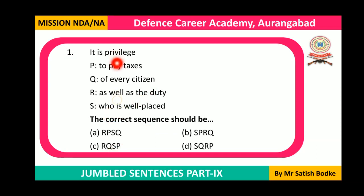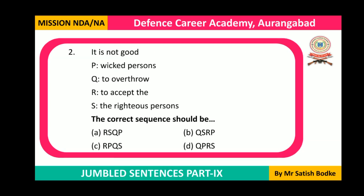The sentence reads: 'It is privilege as well as the duty of every citizen who is well placed' — meaning who has a good job — 'to pay taxes.' The correct sequence is RQSP, which is option C. So our answer is option C.